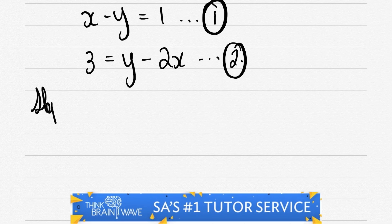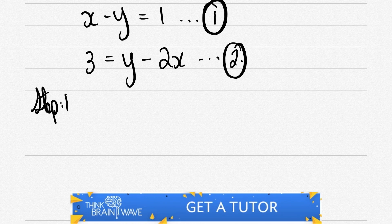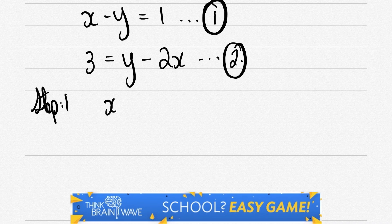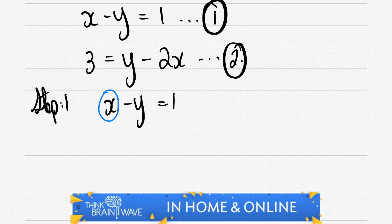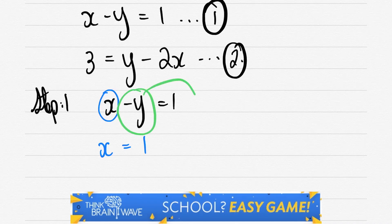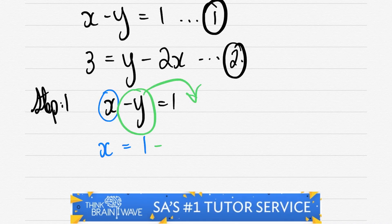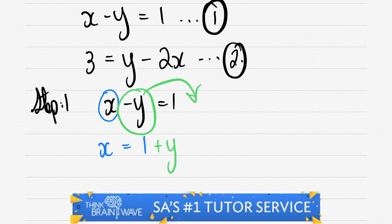We'd like to naturally isolate one of the variables. So in our first step we will do exactly this. Let's look at x - y = 1 as that seems to be the most simple of the two. So let's isolate x. We say x = 1 + y because minus y changes to plus y when it crosses over the equal sign.